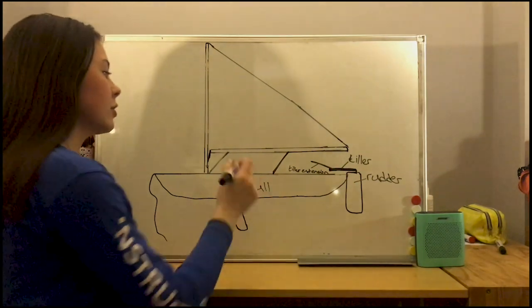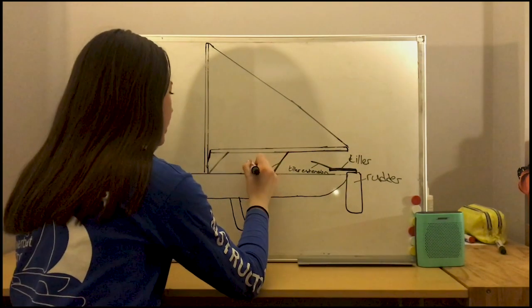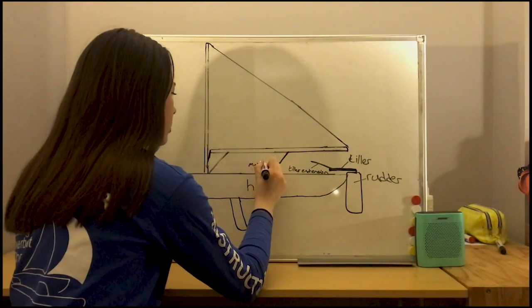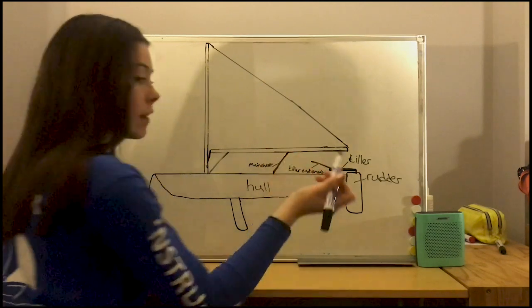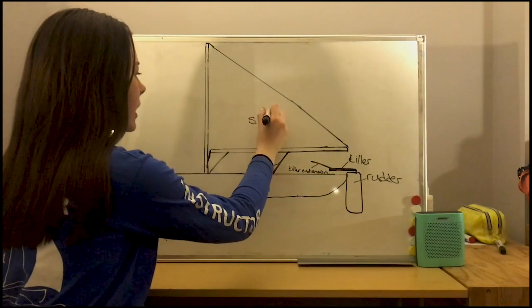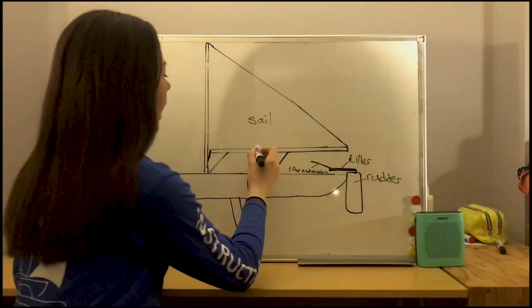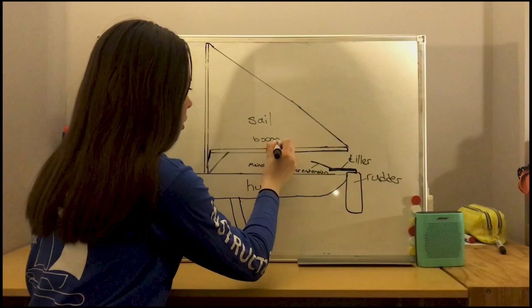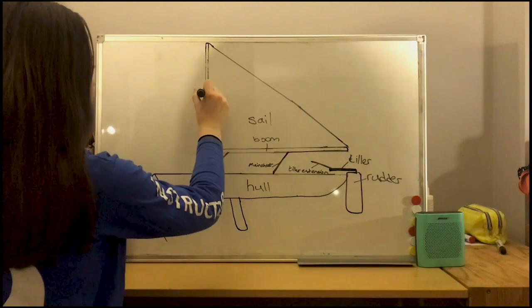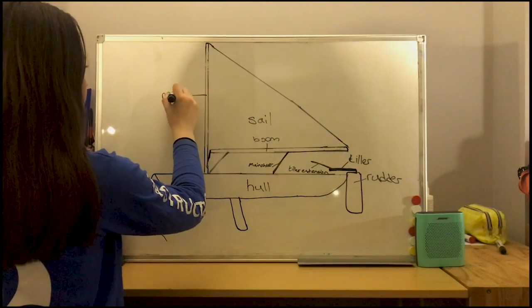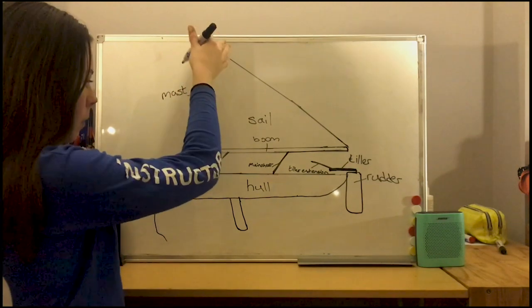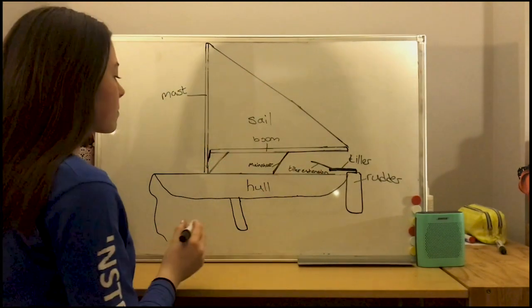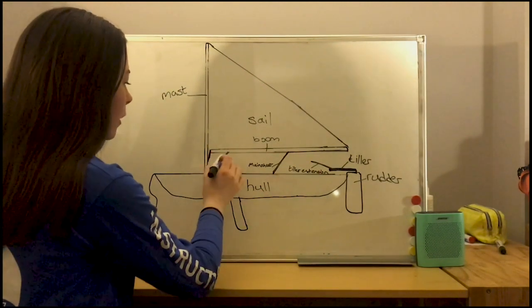Our other basic control, our main sheet to pull in our sail, and then of course we have our sail and we'll go into parts of sail later. And then here we have our boom which holds out our sail and then over here our mast which holds up our sail and then some ropes attached to our sail and our boom.